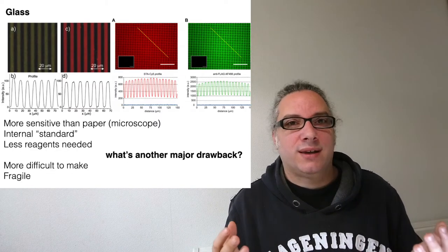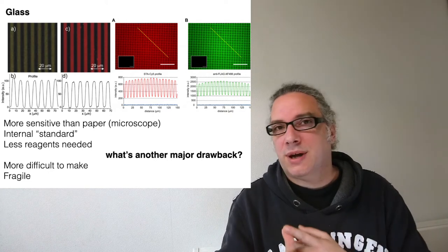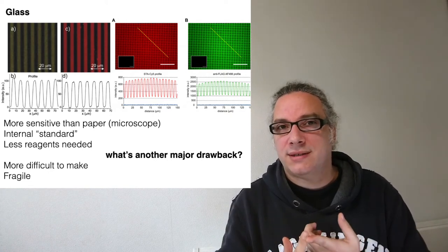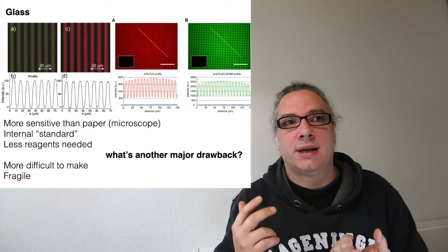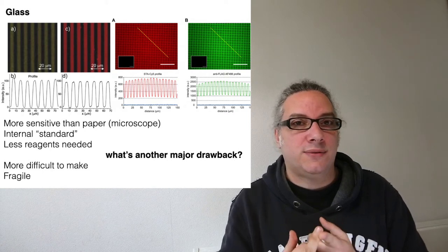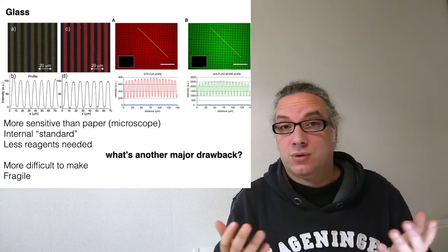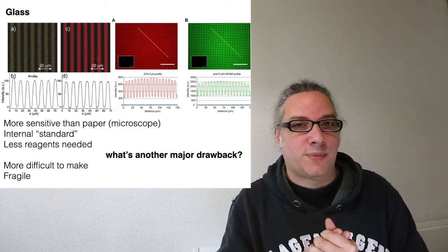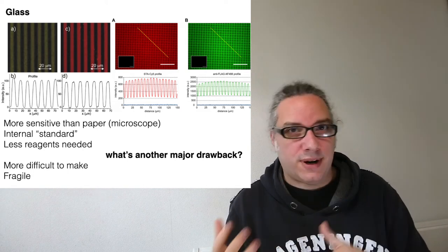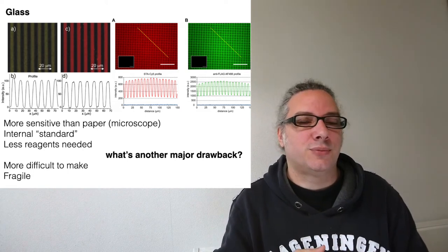At this point, one will think, okay, glass is pretty perfect. I can use the microscope, it's way more sensitive than paper microfluidics, and I can quantify my analyte. So it looks perfect. What's the problem here? Apart from fragile and apart from difficult to modify.